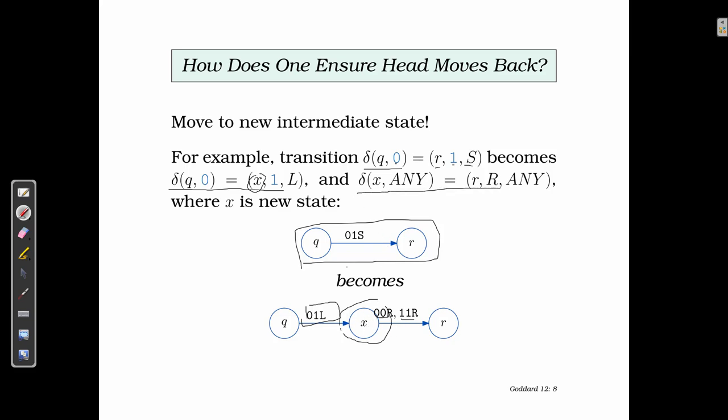We can write this down as delta(X, ANY), any means either it's any of the alphabet, which is, in this case, either 0 or 1. In that case, we simply move back to the R.